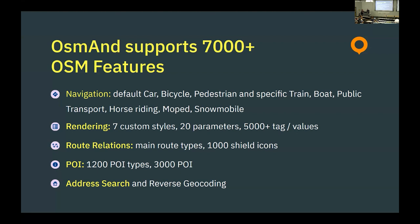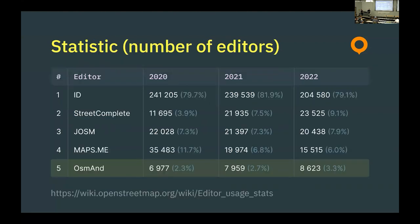You introduce a feature and then people start mapping in that direction because they see the tools they can use. For rendering we support about seven custom styles with lots of parameters. We recently added the ability to select a route relation — of course there are specific tools like Waymarked Trails on openstreetmap.org that do it much better, but we put that idea on mobile devices. Because we rely heavily on OpenStreetMap details, we also introduced an editor quite a long time ago. We're on fifth place by number of editors and that number is growing, so we definitely need to do a better job.